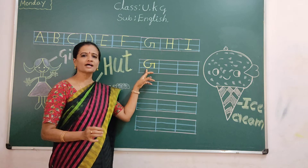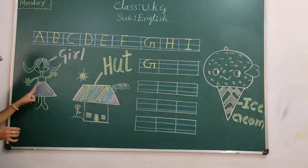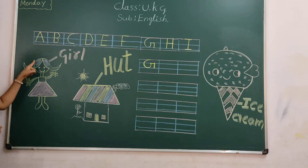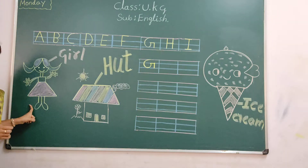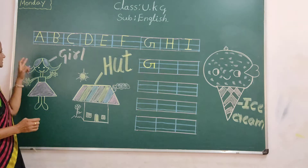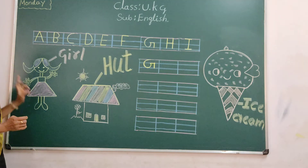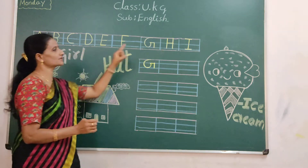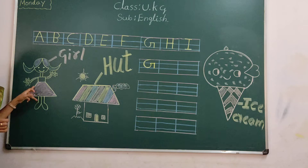G for girl. Which picture is this one? See here — girl picture. Which picture? Girl. G for girl. Say it, children — G for girl, G for girl.